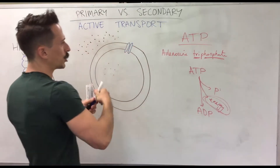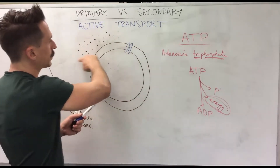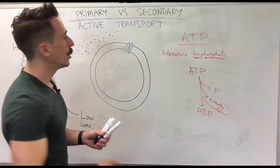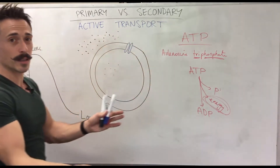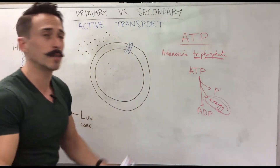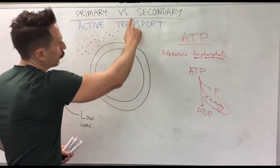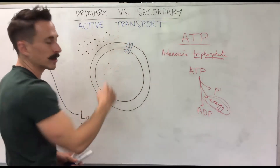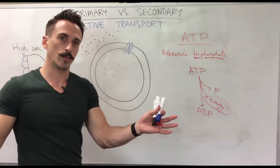If this channel is specific for this particular substance or solute and it's opened up, the process of diffusion occurs. All these solutes will move down their concentration gradient into the cell until they're evenly distributed.